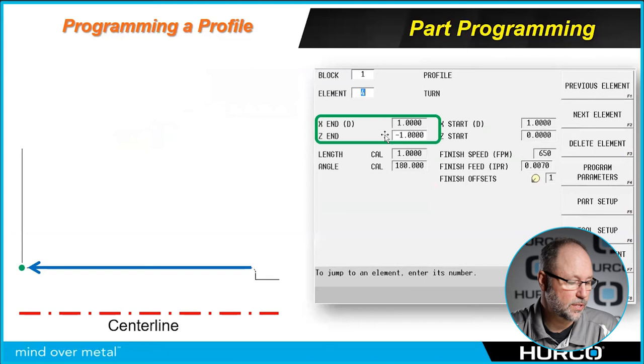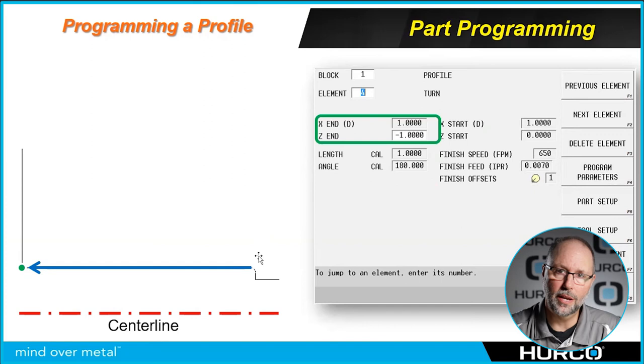The next element that we're going to do is a turn. It's going to move from the end of that blend arc all the way back. What the control is going to do is between this face, this little short face here, and this long turn, it's going to insert that blend arc. That's why we didn't give it a clockwise or counterclockwise, because it's going to blend that arc between the previous and next elements or segments.